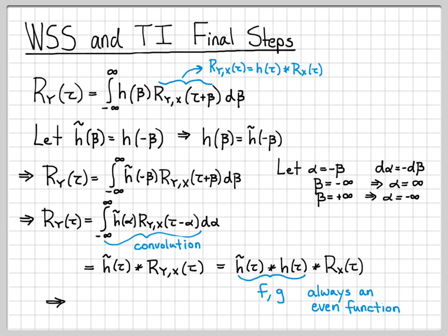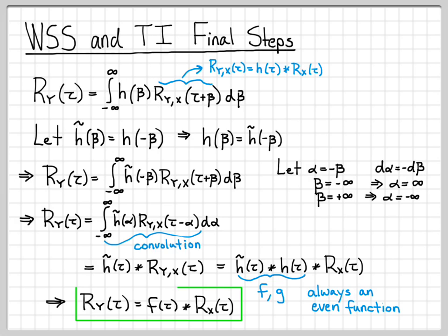That's a good sanity check. Choosing f(τ) as our representation, we arrive at the final equation: for any linear time-invariant system with a wide-sense stationary random process as input, we can easily compute the autocorrelation function of the output by convolving the impulse response with its time-reversed copy to get f(τ), then convolving f(τ) with the input autocorrelation function R_x(τ). This equation in the green box is what we've been looking for, and we're done deriving this input-output relationship.